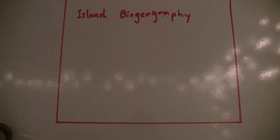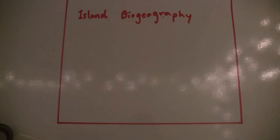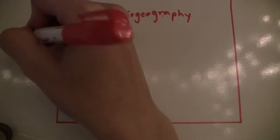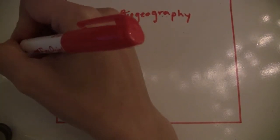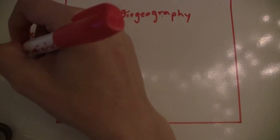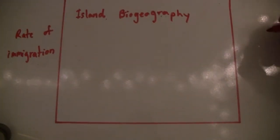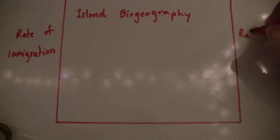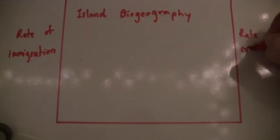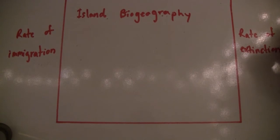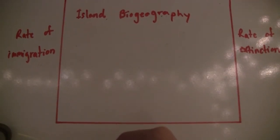Hey everyone, today we're going to be talking about island biogeography. What we have here is a graph: on the y-axis we're going to have rate of immigration and rate of extinction, and on the x-axis we're going to have the number of species on an island.